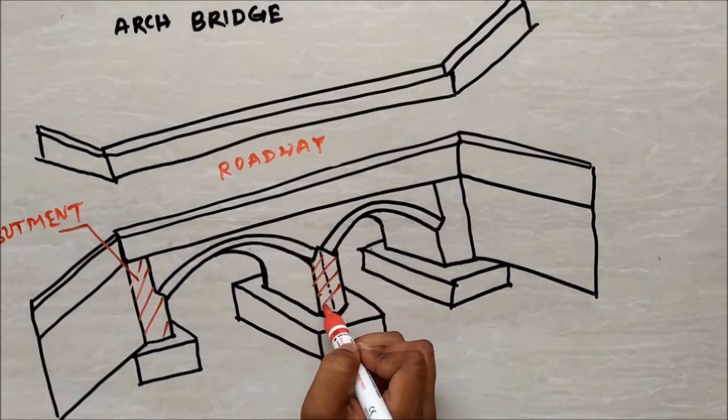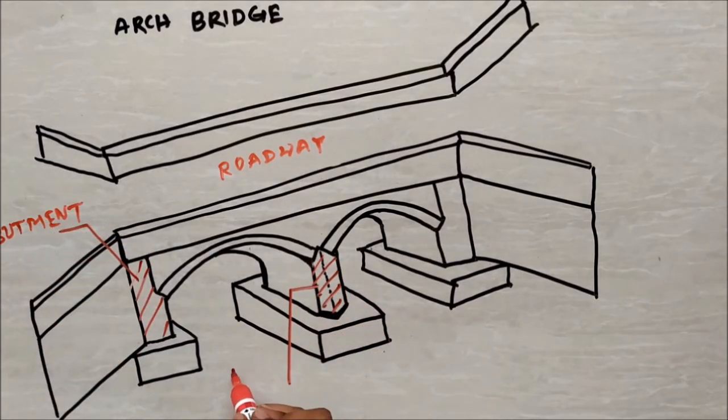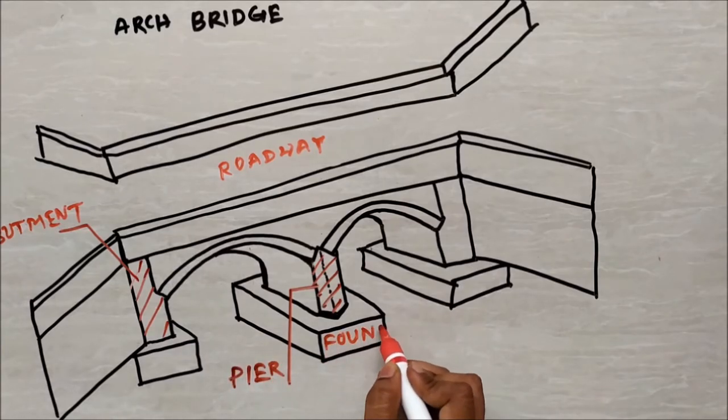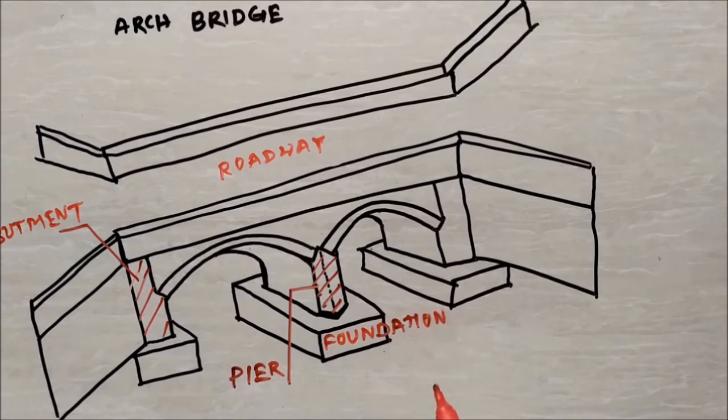And this is pier, which is an intermediate support of the bridge superstructure. And the bottom part of the abutment and pier shown in the diagram is foundation, which is the lowest part of the substructure in direct contact with soil and transmits all the loads from substructure to soil.